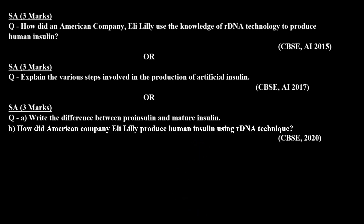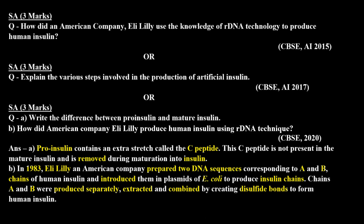Let's check the answer. So what did Eli Lilly company do? Insulin has two chains — A peptide and B peptide. They synthesized the DNA sequences for A peptide and B peptide in the lab, then introduced them into E. coli. E. coli produced the A and B chains separately. They then extracted them from E. coli and added the disulfide bonds in the lab, producing artificial human insulin.